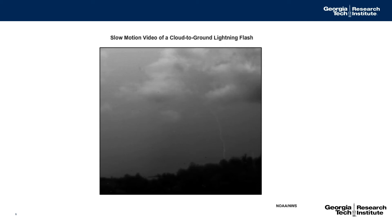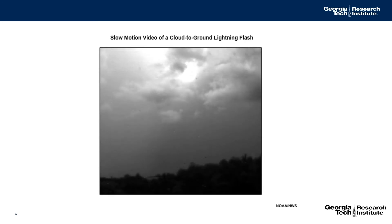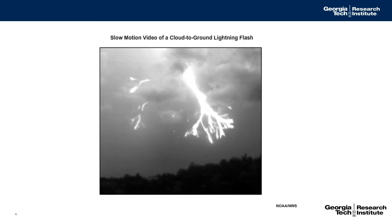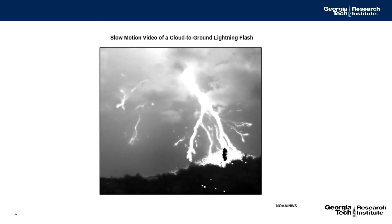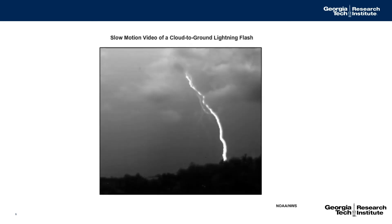It's actually that lightning going from the ground up that we see as the main lightning flash. So the interesting thing is, most of the lightning you see is actually traveling from the ground up to the cloud instead of from the cloud down to the ground.